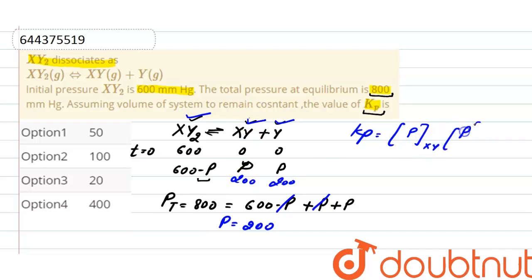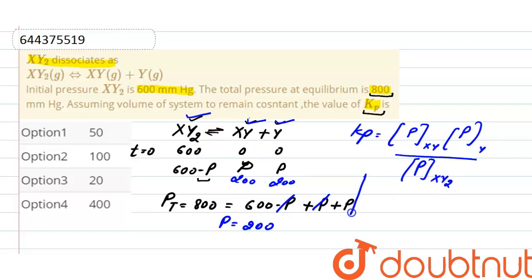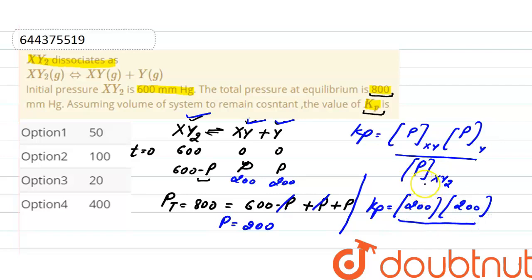Kp equals the pressure of XY at equilibrium multiplied by the pressure of Y at equilibrium, divided by the pressure of XY₂ at equilibrium. Putting in the values: Kp = (200 × 200) / (600 − 200) = (200 × 200) / 400.